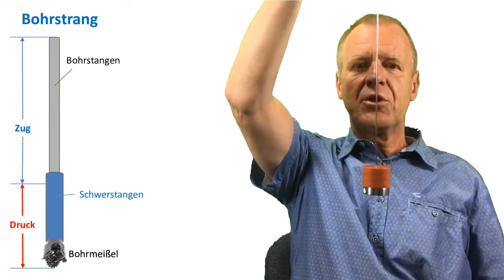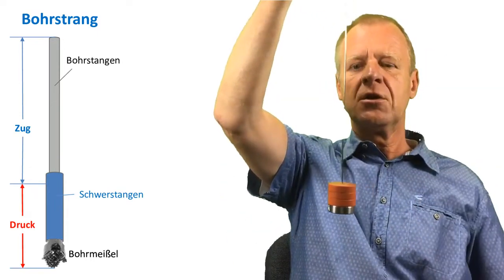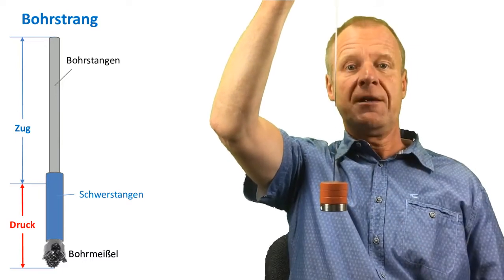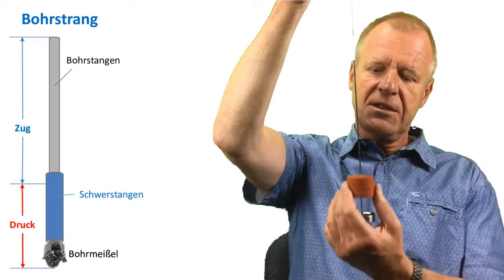They provide the required weight on the bit that we need to enable us to apply pressure on the bit and also help us keep the drill string in tension to avoid the bending and the buckling.